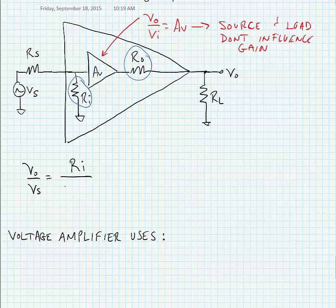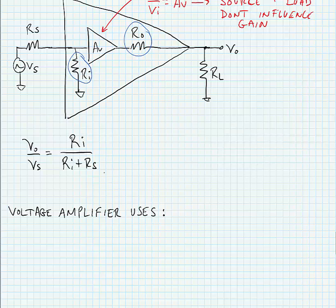The first one would be RI divided by RI plus RS, the impedance of the signal generator. We'd multiply this by the voltage gain of the ideal amplifier, and finally we have a voltage division at the output: RL divided by RL plus RO.